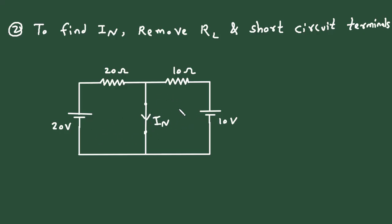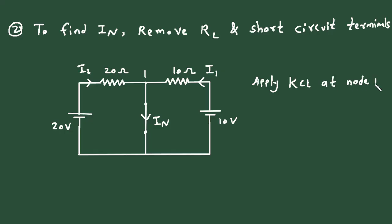Now we can easily find the value of Norton's current. Let's say this is current I1 and this is current I2, because current flows from the positive terminal to the negative terminal. To find In, let's assume this is a node — node 1. Applying KCL at node 1: the summation of all currents entering a node equals the summation of all currents leaving. Here the entering currents are I1 plus I2, and the leaving current is In, so I1 plus I2 equals In.